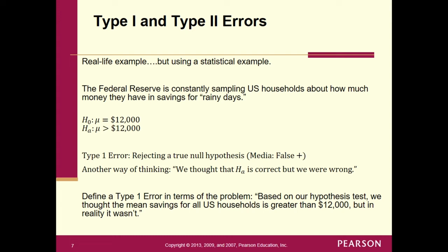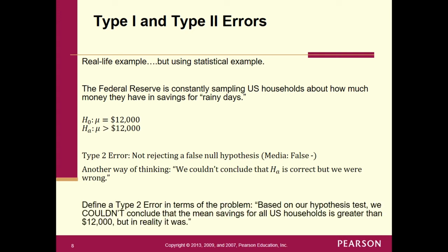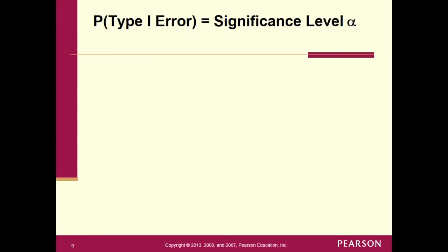For a Type 2 error — not rejecting a false null — we couldn't conclude HA is correct, but we were wrong. So in this problem: we couldn't conclude that mu was greater than $12,000, but in reality it was. In words: based on the hypothesis test, we couldn't conclude the mean savings for all U.S. households is greater than $12,000, but in reality it really was. And why do these things happen? Bad luck.